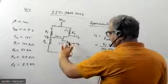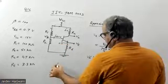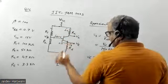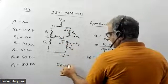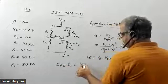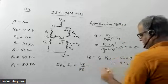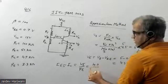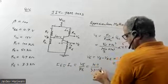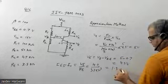Once I know VE, I can easily calculate the current in RE. Taking IE approximately equal to IC, that equals VE upon RE. VE is 4.3V and RE is 3.3 kilo-ohms, so solving this gives approximately 1.3 milliamperes.